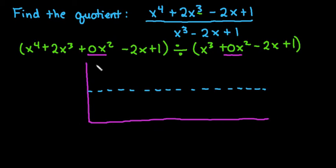Inside of the box at the top, we're going to go through and we're going to write the coefficients of our dividend. So we would start with the 1x to the 4th, the 2, the 0, negative 2, and 1.